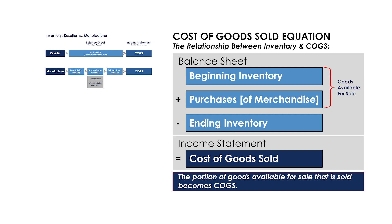This suggests that if inventory drops on account of sales, the value of that inventory is captured by COGS. It also means that if you get this process wrong, you won't know what your actual profit is and your financial statements will not tie together.